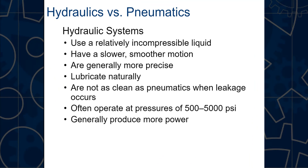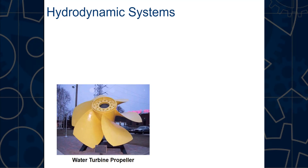Hydraulics versus pneumatics: hydraulics use a relatively incompressible liquid, are slower which gives them a smoother motion, and are generally more precise. They lubricate naturally but are not as clean as pneumatics when leakage occurs, since most hydraulic fluids are not environmentally safe. They often operate at pressures of 500 to 5,000 psi, unlike the roughly 100 psi typical for pneumatics, and they generally produce a lot more power.